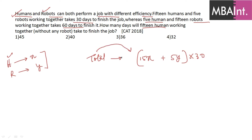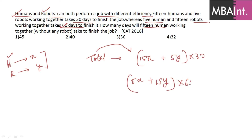The second condition states that 5 humans and 15 robots complete the same work in 60 days. So I can write: total work = (5x + 15y) × 60. Since both expressions represent the same total work, I can equate them to get the relationship between x and y.